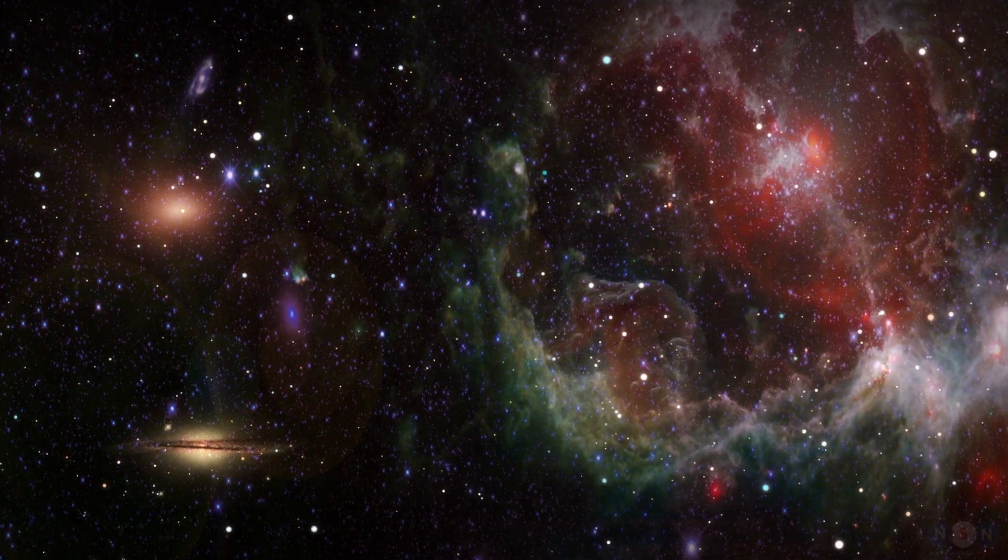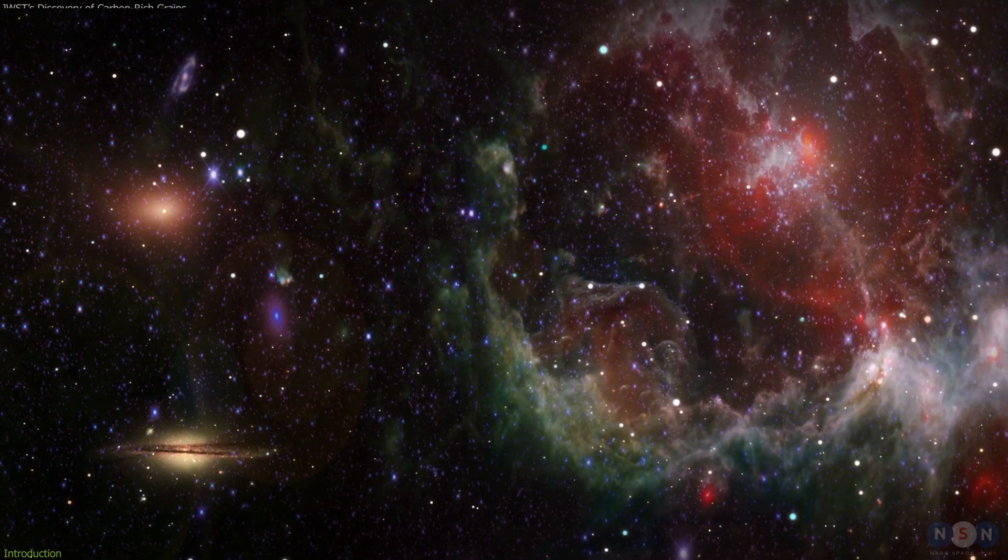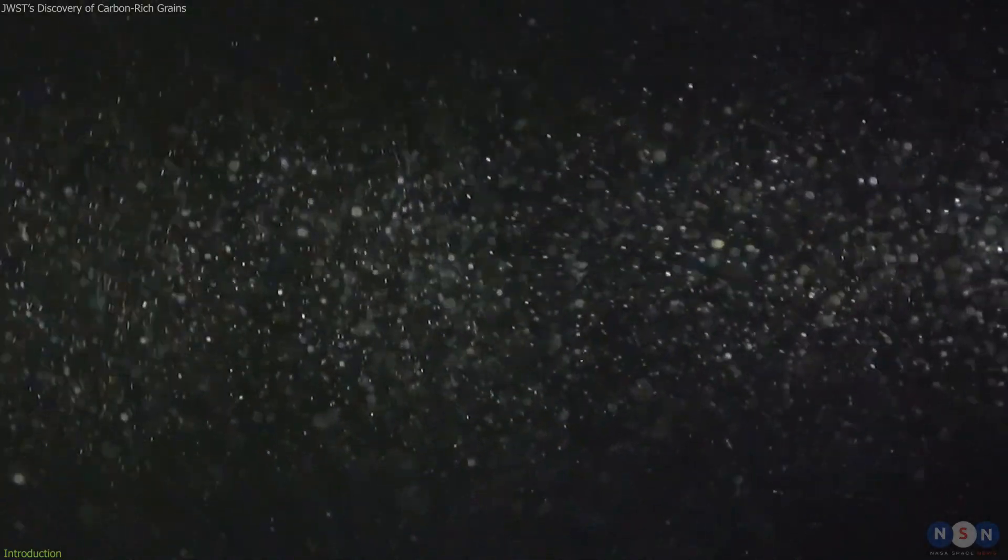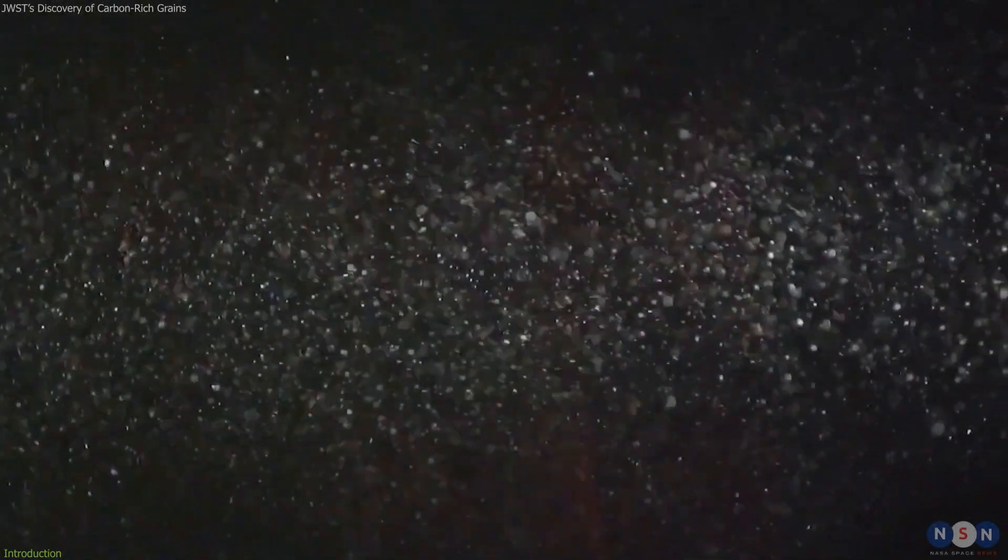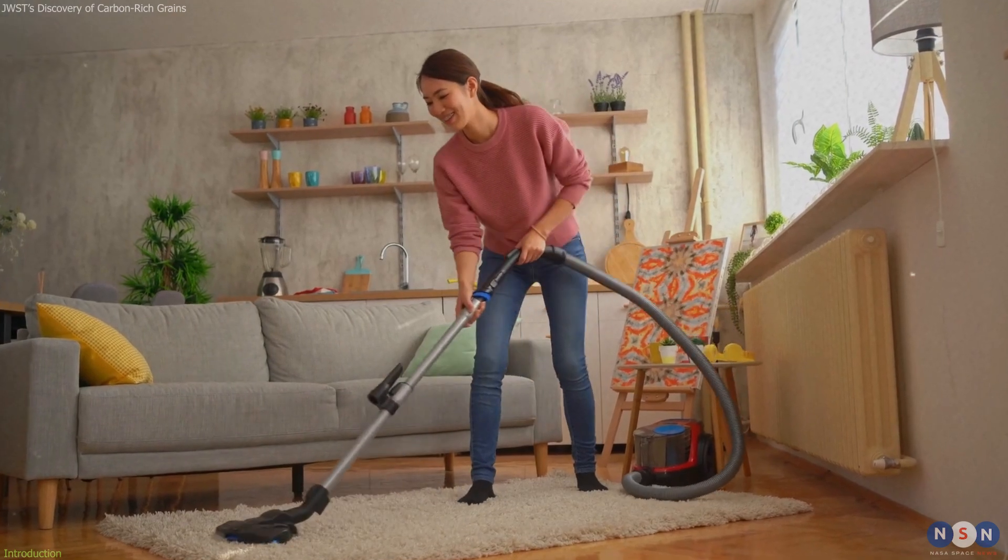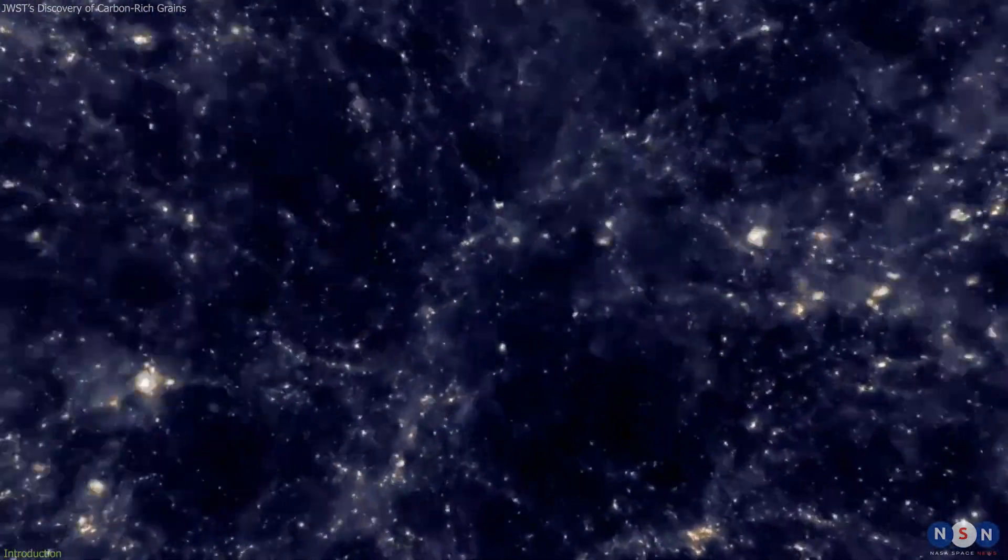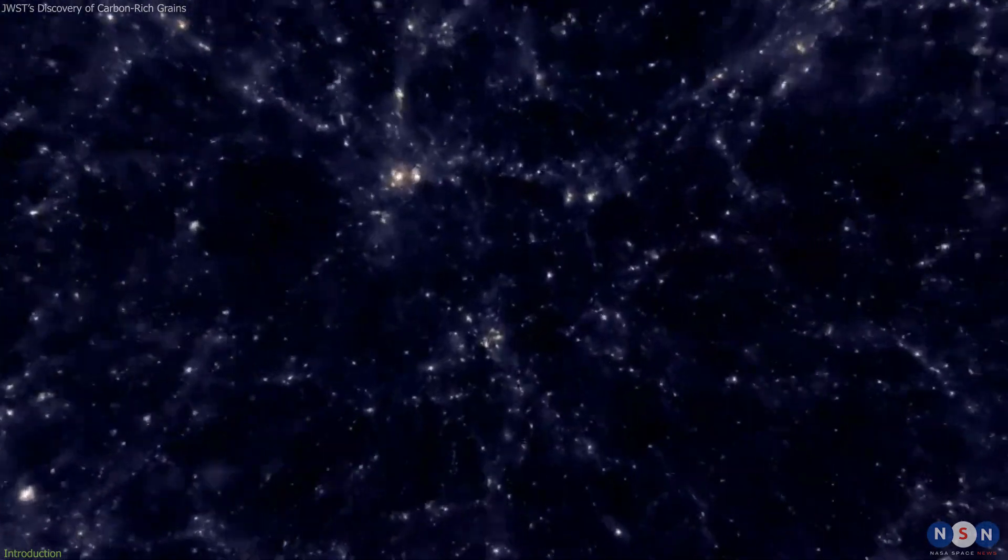The universe is full of surprises, and sometimes they come in the form of dust. Dust grains are not just ordinary dust that you find on your furniture or in your vacuum cleaner. They are tiny solid particles that are made of different elements and have different shapes and sizes.